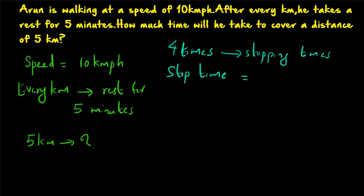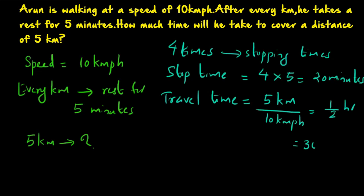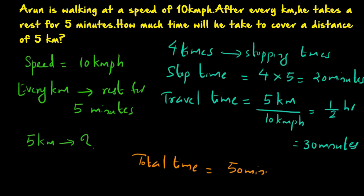The stop time equals 4 times 5 minutes, which is 20 minutes. His travel time equals distance divided by speed: 5 km divided by 10 km per hour equals half an hour, which is 30 minutes. So the total time taken to cover the distance of 5 km is travel time plus stop time: 30 minutes plus 20 minutes equals 50 minutes.